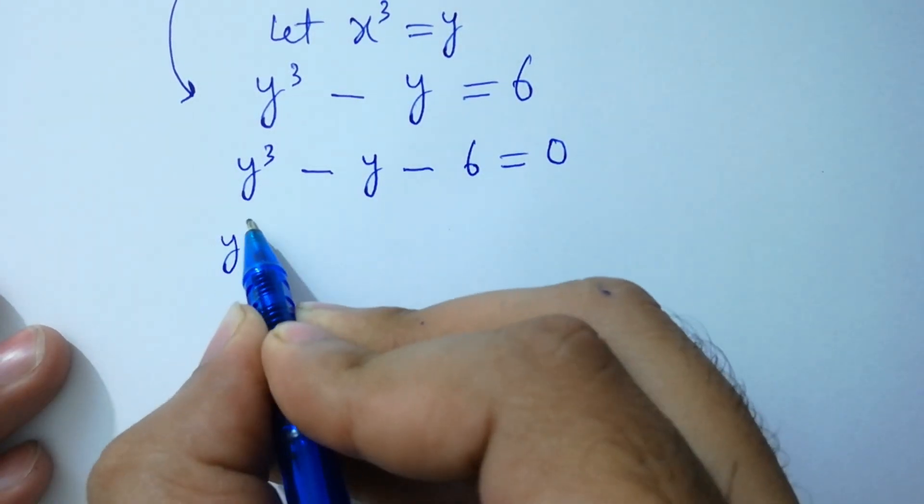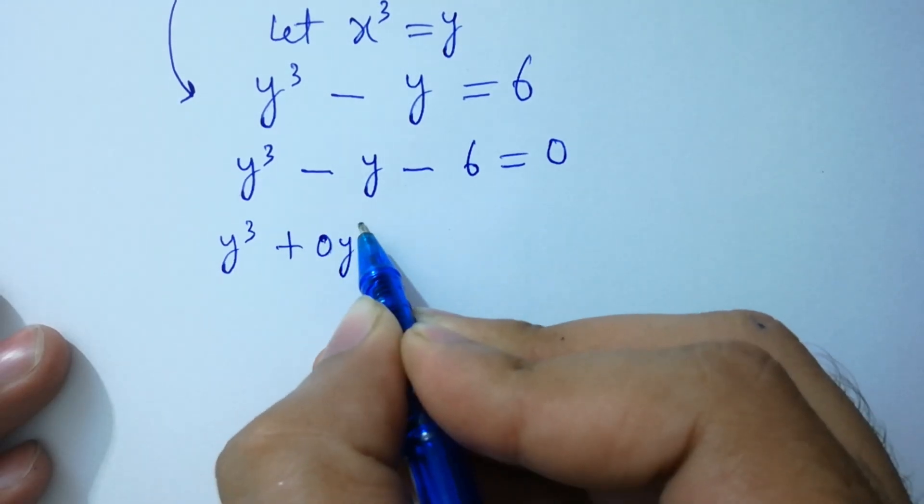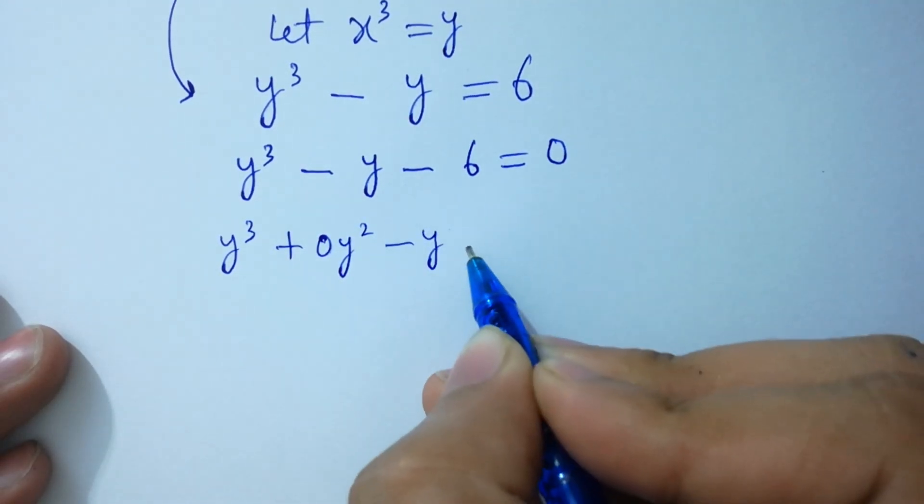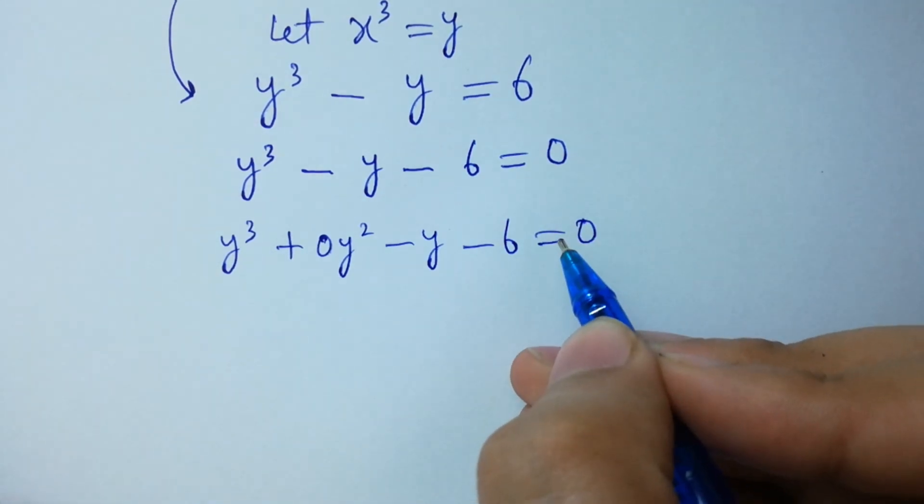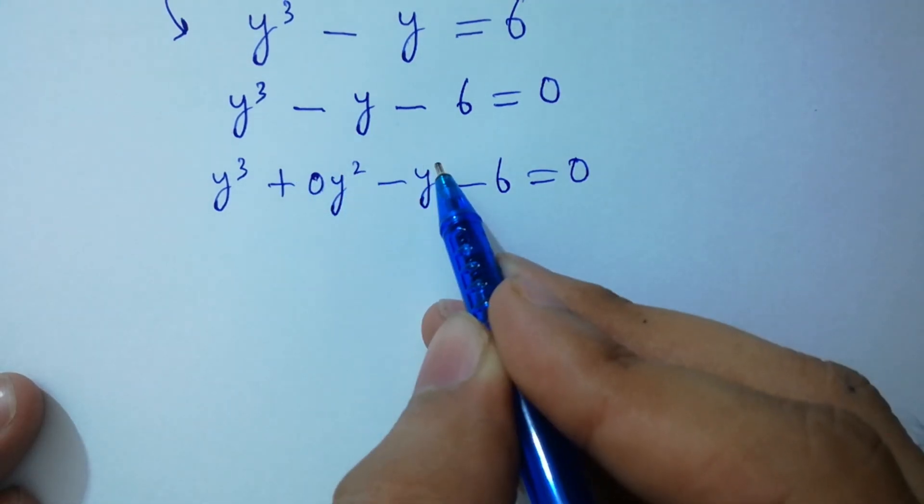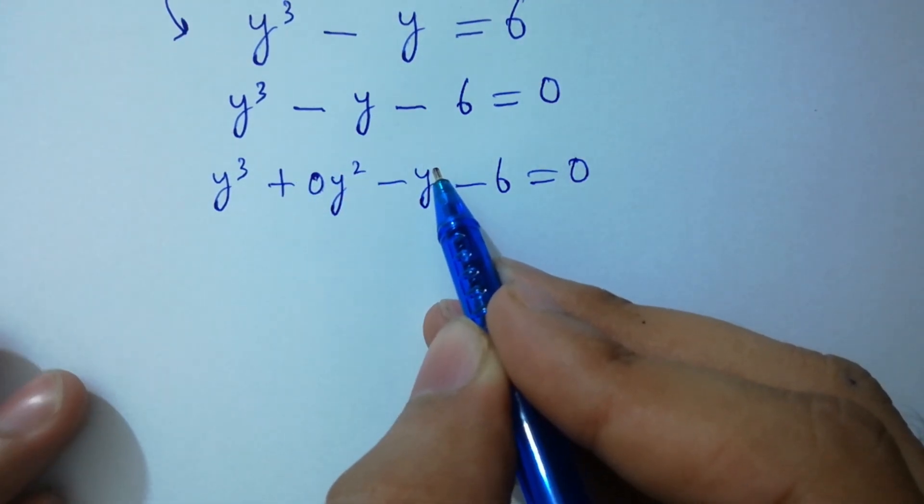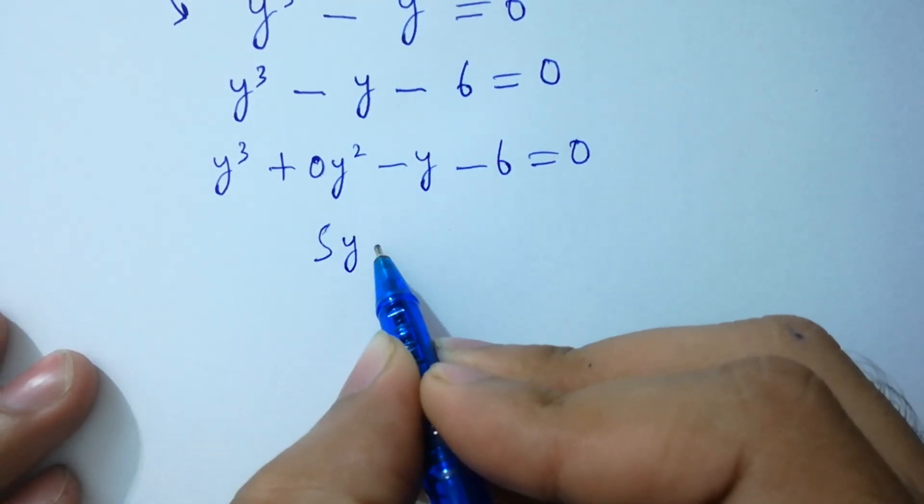Here, y cube plus 0 y square minus y minus 6 equal to 0, which is same as y cube minus y minus 6 equal to 0. So, synthetic division, I am going to apply here.